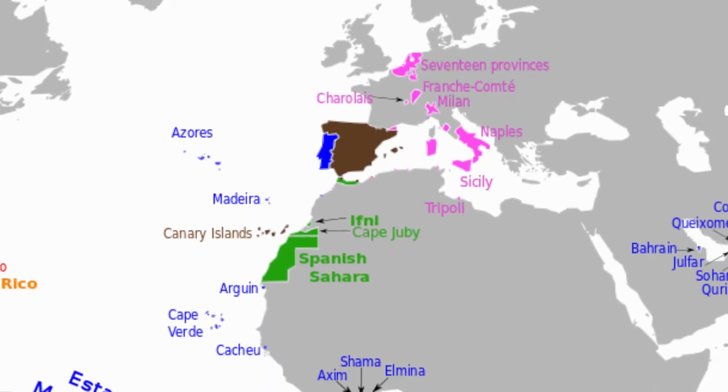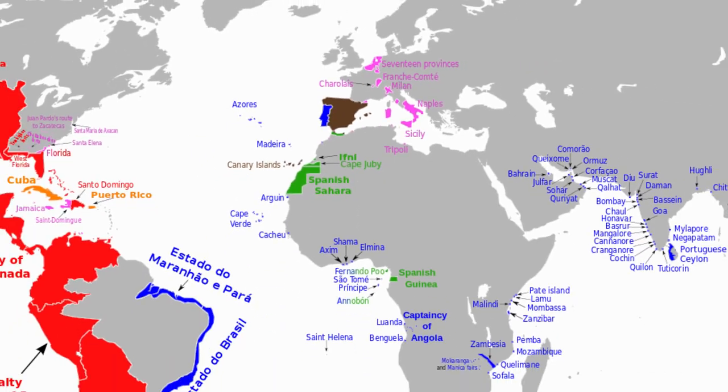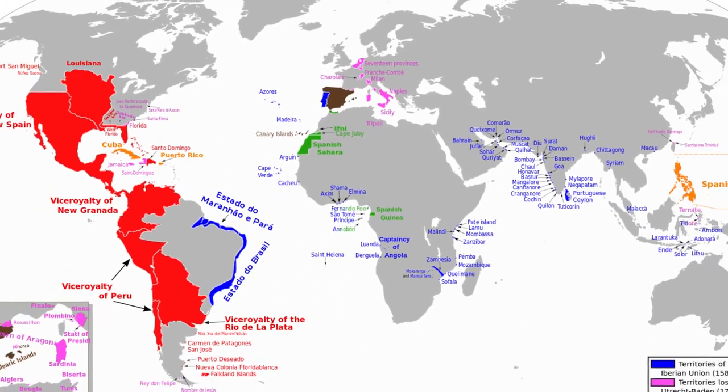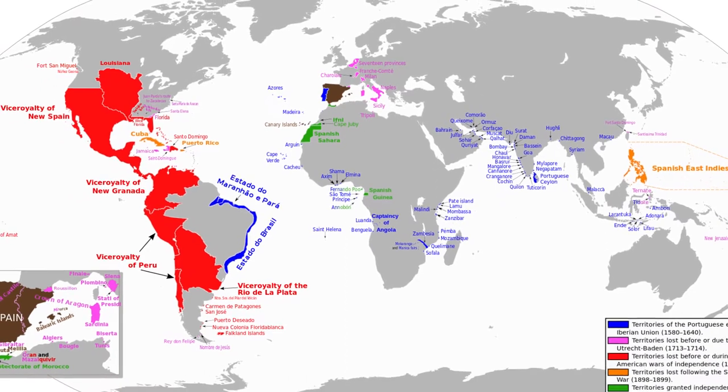Columbus, of course, did not find a new trade route to Asia. Rather, he discovered new continents, the Americas. In the decades after Columbus, the Spanish conquered vast territories in the Americas and set up a colonial empire. Spain became incredibly wealthy during the 16th and 17th centuries, especially from its silver mines in South America. Spain also came to control the Philippines in Asia in this period.